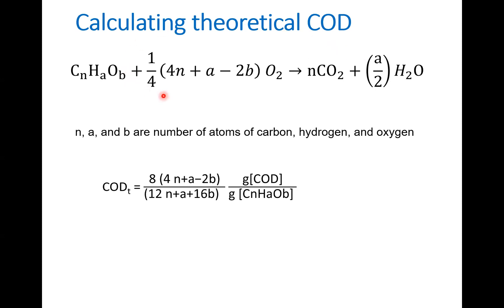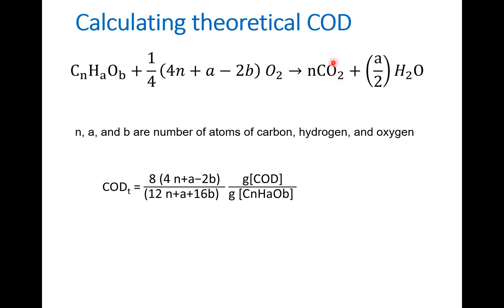We also covered how to calculate the theoretical COD. If we have an organic compound with the formula CₙHₐOᵦ — where n is the number of carbon atoms, a is the number of hydrogen atoms, and b is the number of oxygen atoms — we can determine how much oxygen is needed to oxidize this material. The result of this oxidation is carbon dioxide and water.